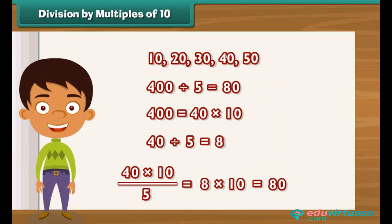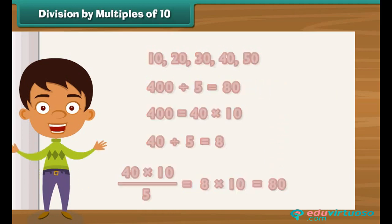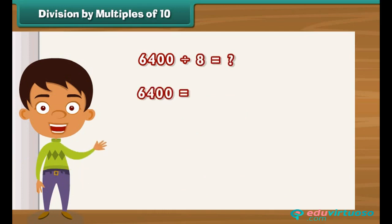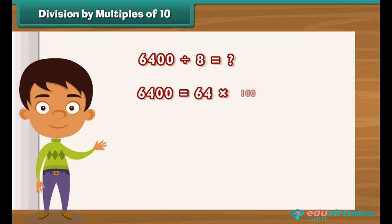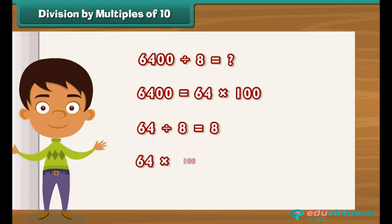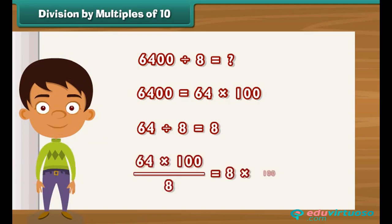Similarly, let us find the result of 6400 divided by 8. 6400 can be written as 64 into 100. 64 divided by 8, as we know, is 8. So, 64 into 100 divided by 8 is 8 into 100, or 800.